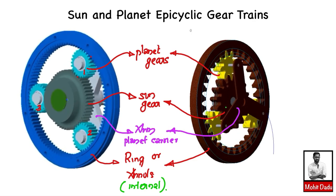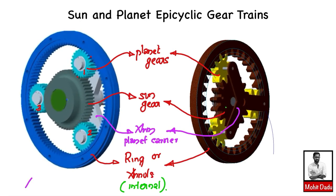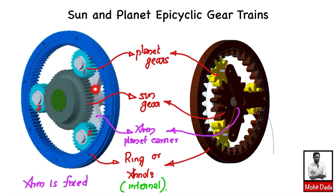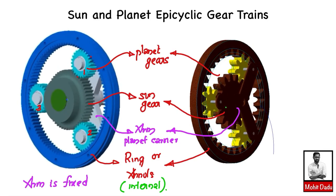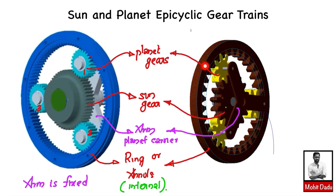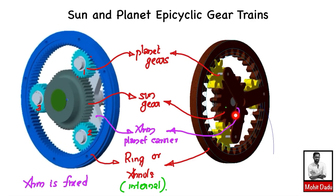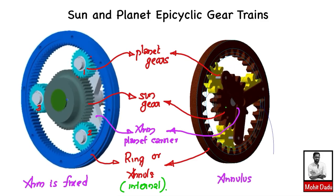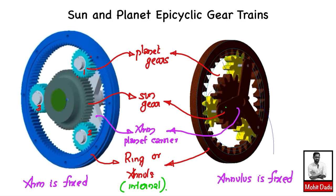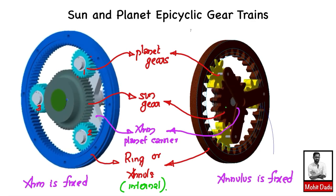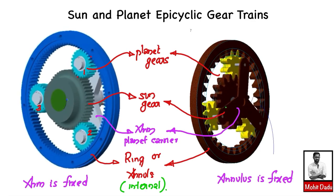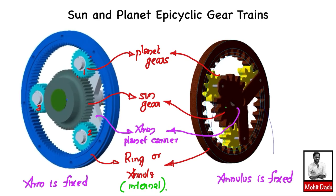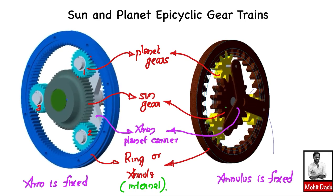These are the elements of the sun and planet epicyclic gear train. On the left side in the animation, the arm is always stationary — this gray colored element is fixed. On the right side, the ring gear or annular gear is fixed, and the other elements — sun, planet, and planet carrier — have rotational motion. So the left animation shows the case where the arm is fixed, and the right animation shows the case where the annulus is fixed.